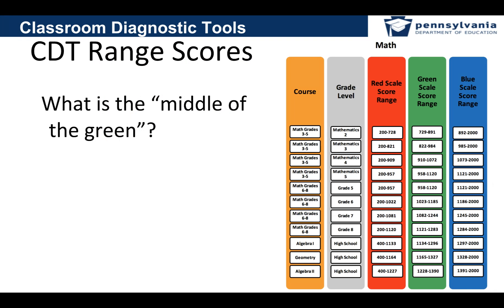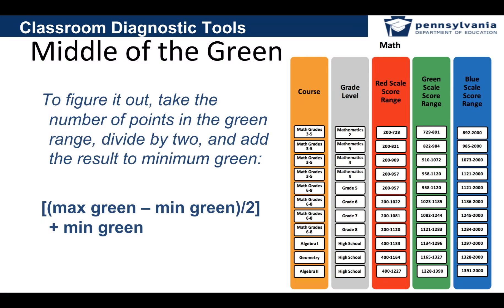What is the middle of the green? It is a mathematical calculation and also a reference to being on track — on track to proficiency. Where do we begin to see students hitting a particular number in the CDT and also on track to proficiency on our state assessments? You can calculate it by taking the maximum number of points in the green range for a particular grade level, subtracting the minimum number of points in that green range, and dividing by two to get the middle of the green.